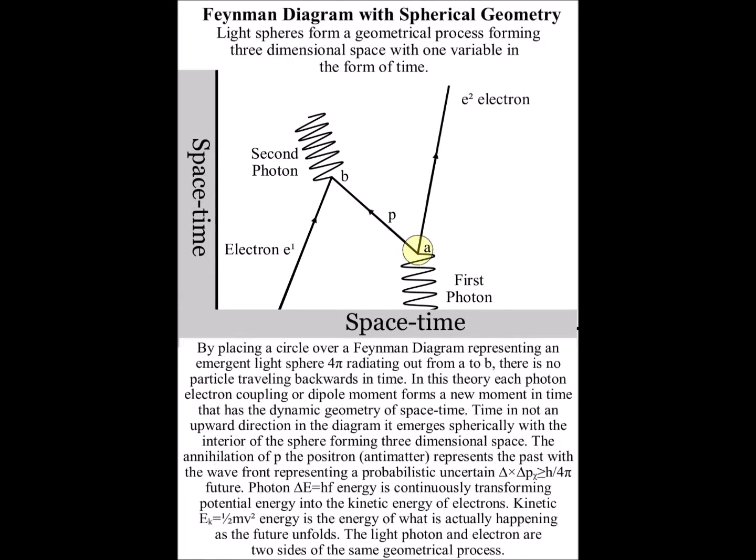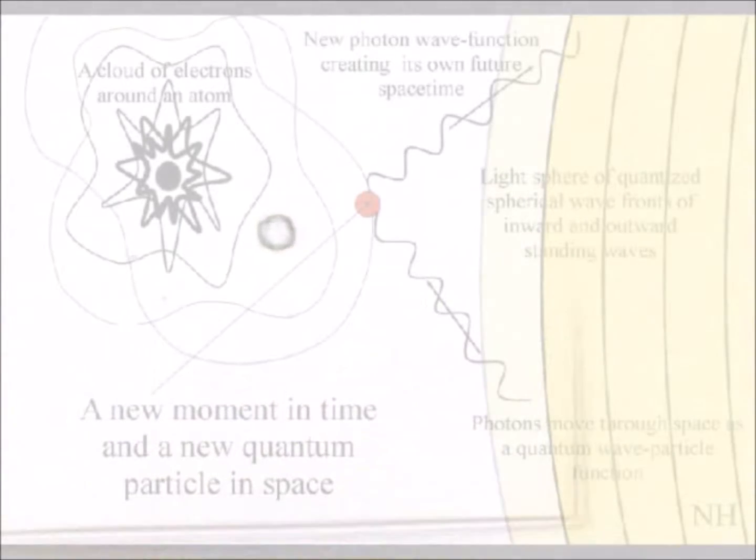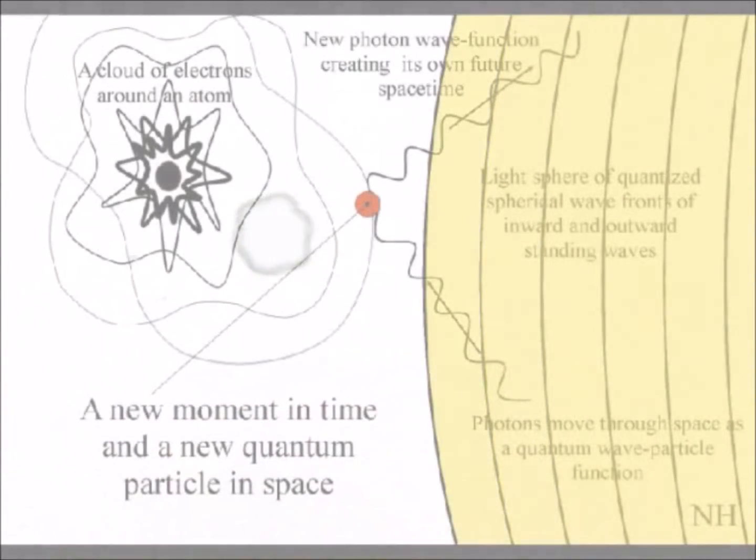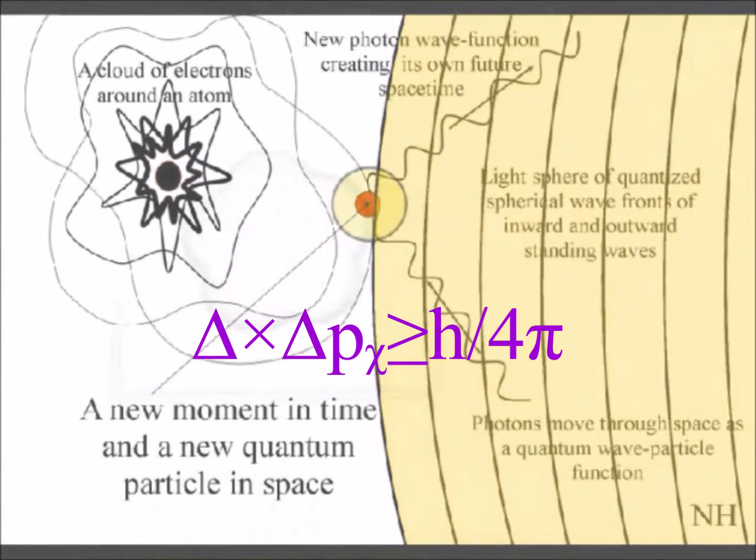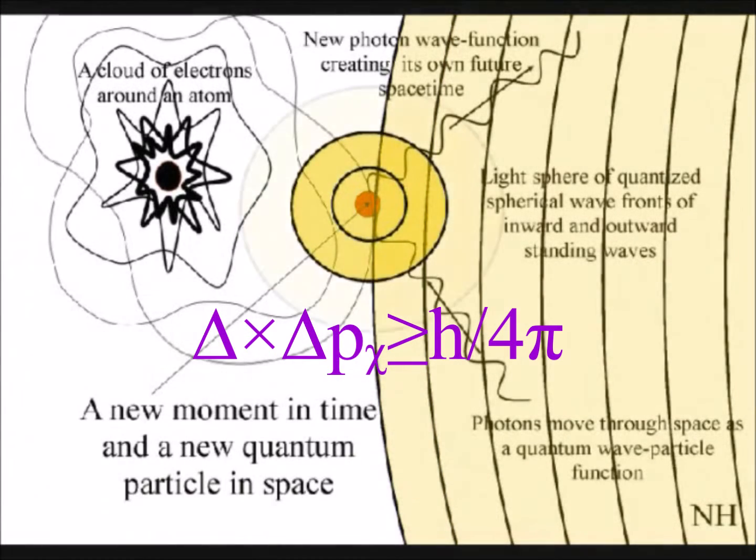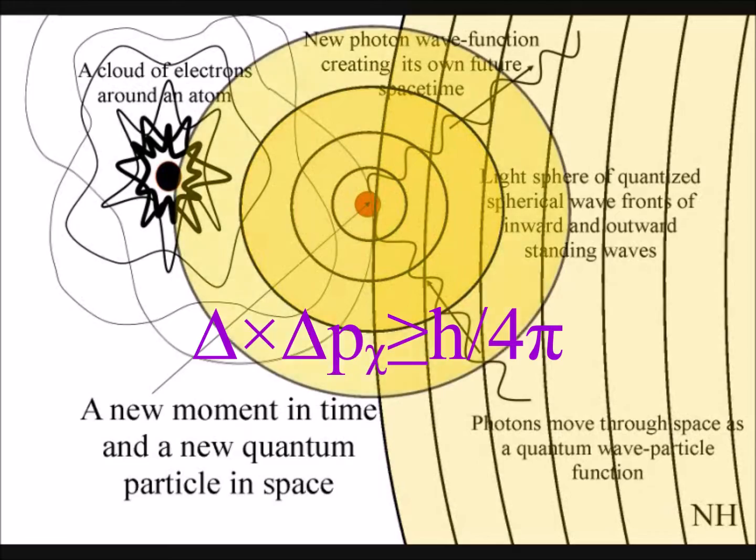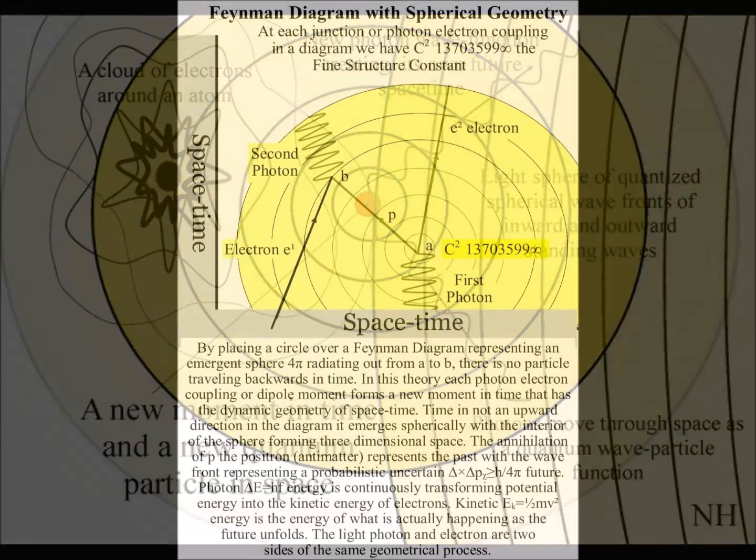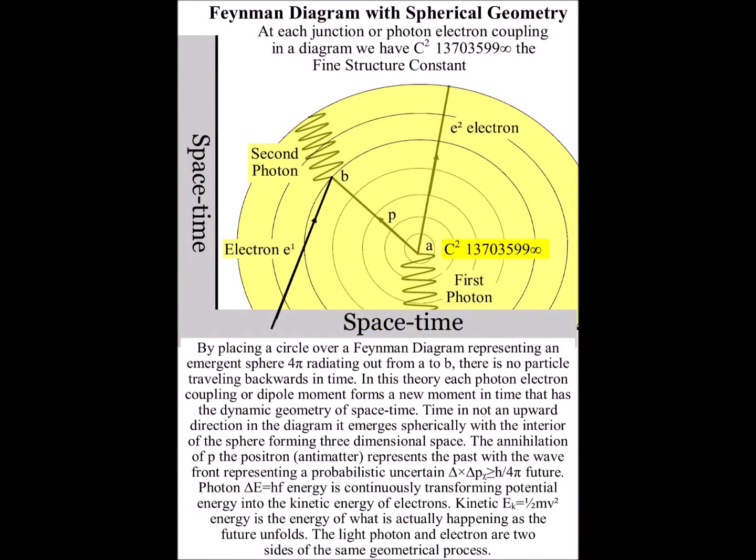By placing a circle over a Feynman diagram, representing an emergent light sphere radiating out from A to B, there is no particle traveling backwards in time. In this theory, each photon-electron coupling forms a new moment in time that has the dynamic geometry of space-time. Time is not an upward direction in the diagram.